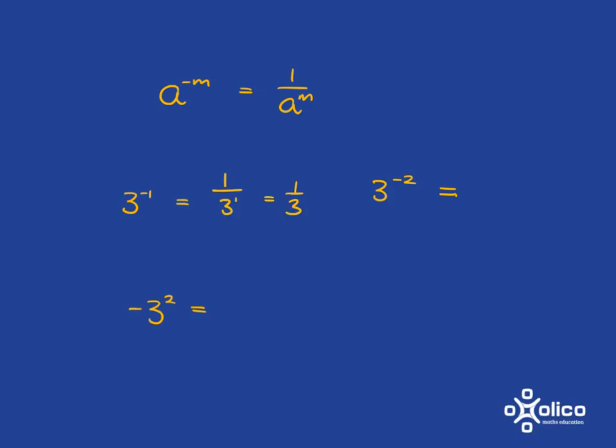Again, here, your negative is in the exponent, so it just plays the role of telling you you've got to go 1 over, and in this case it's 3 squared, which is 3 times 3, which is 9.